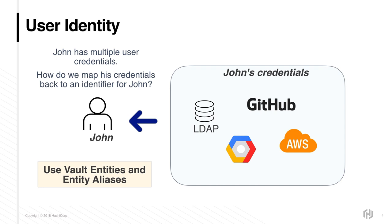When a client authenticates against a credential back-end, Vault creates a new entity and attaches a new alias to it, if a corresponding entity doesn't already exist. The entity identifier will be tied to the authenticated token. When such tokens are put to use, their entity identifiers are audit-logged, making a trail of actions performed by specific users.